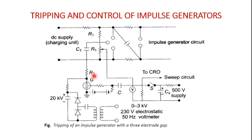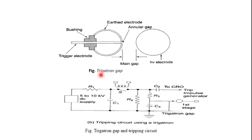R2 ensures decoupling of the voltage oscillations produced at the spark gaps from entering the oscilloscope through the common trip circuit. The three electrode gap arrangement requires large space and elaborate construction, so nowadays the trichotron gap arrangement is used instead, which eliminates the drawbacks of the three electrode gap arrangement.